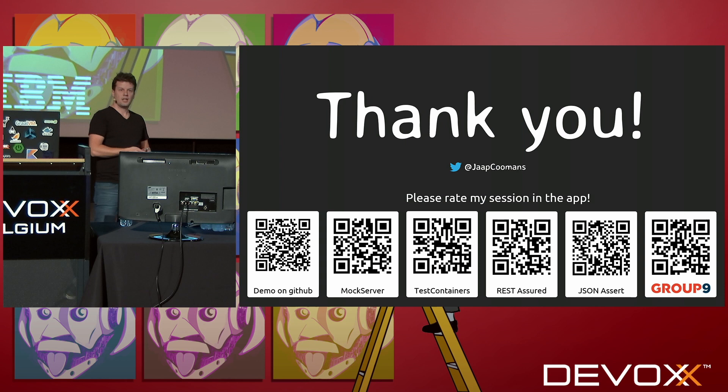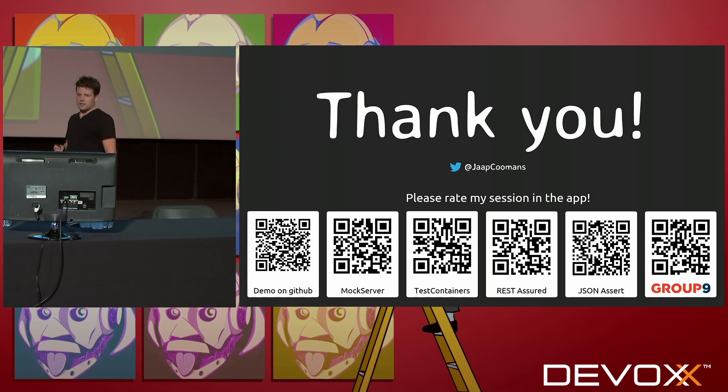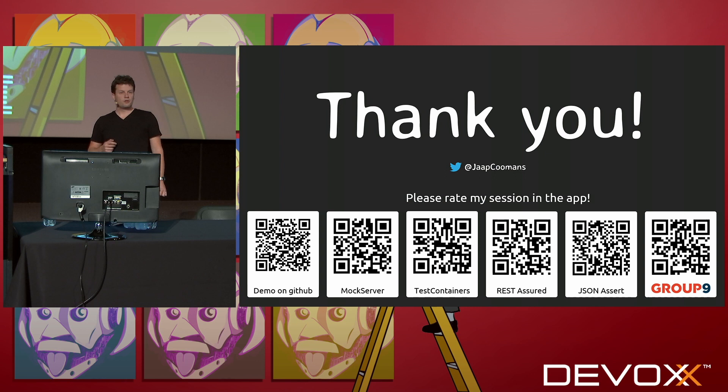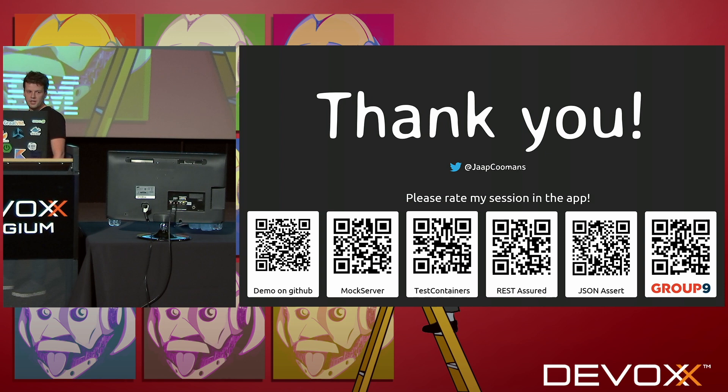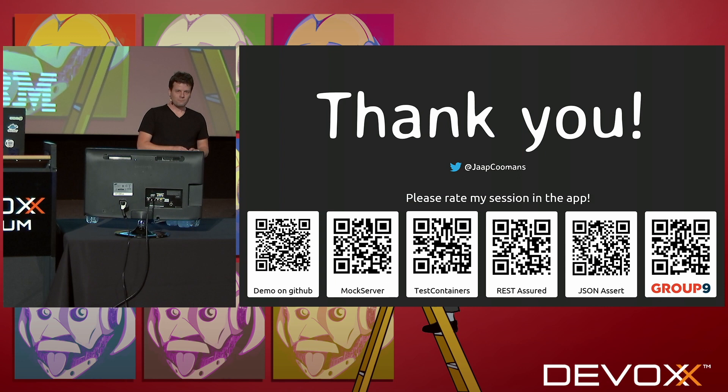With that I've reached the end of my talk. There are some QR codes — I had all the URLs up there but it was even more messy, so I chose this setup. You can find the demo on GitHub to check it out at your own pace, along with more information about MockServer, TestContainers, REST Assured, and JSONassert. And of course visiting the site of my employer would greatly help them. Thank you all!